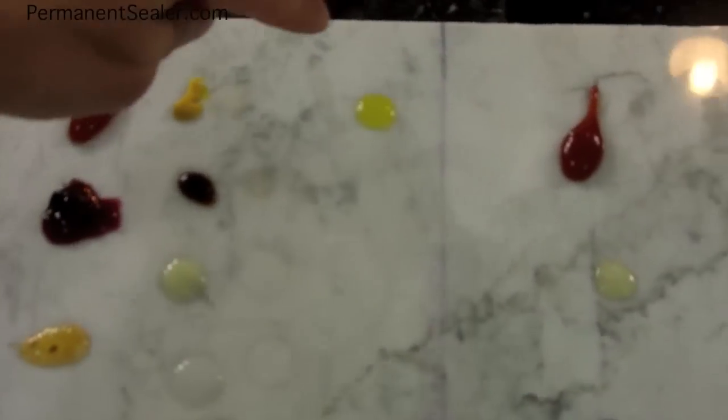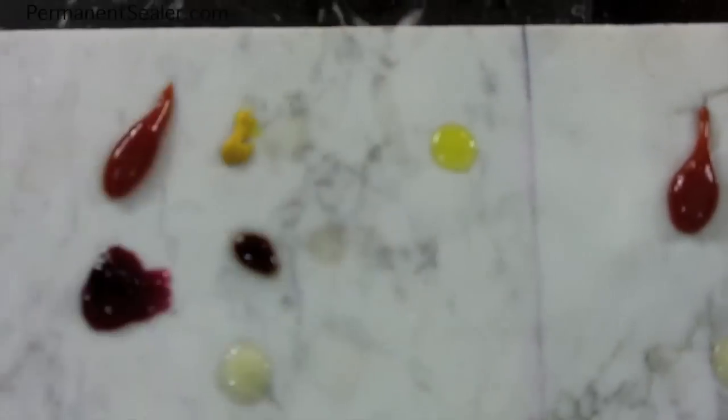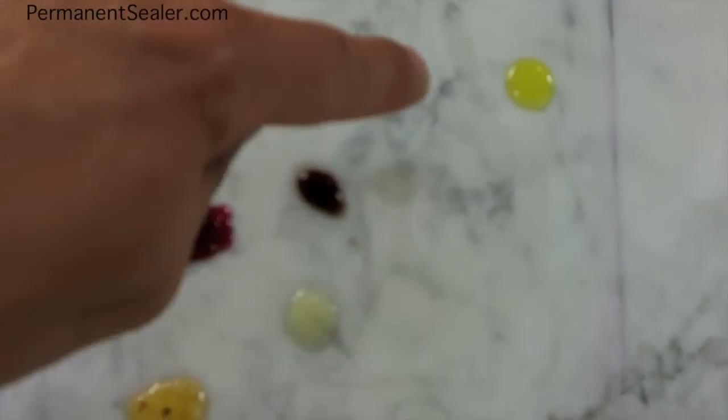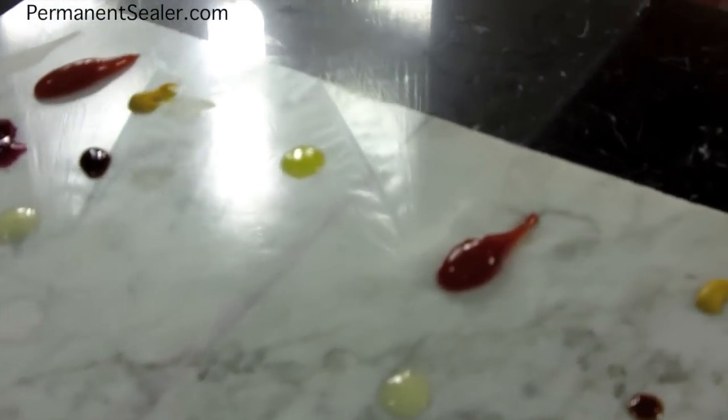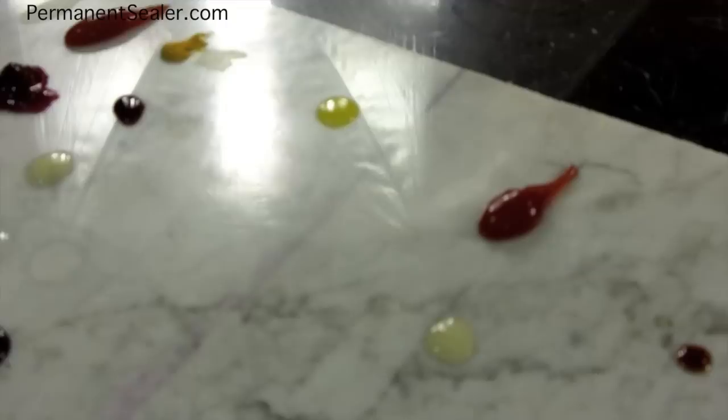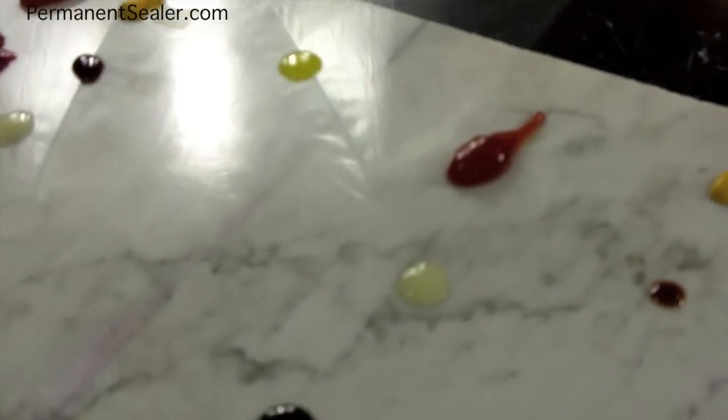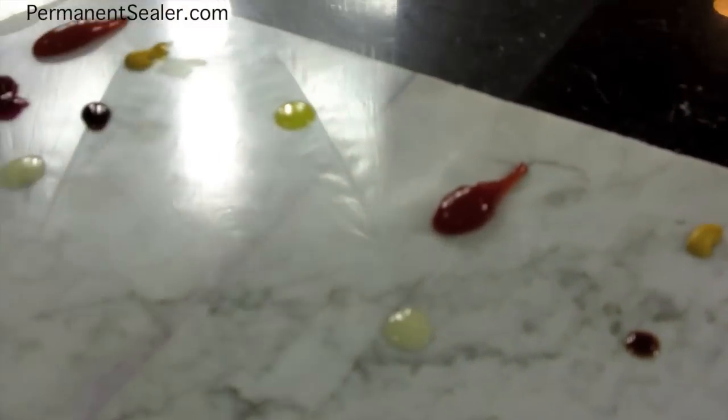Same thing for the olive oil. This is again on the 20-year sealer. You can see that it left the stain right there, no etch on the olive oil. As I angle it you'll see that olive oil is neutral, it does not have any acid, so you don't see any etches at all.